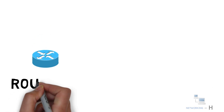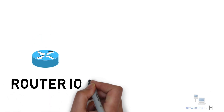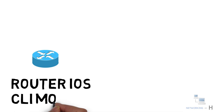Hello friends, in this video we will discuss router IOS CLI modes. CLI is the main interface where we interact with Cisco IOS devices. From here we can do things such as monitoring device status or changing configuration.